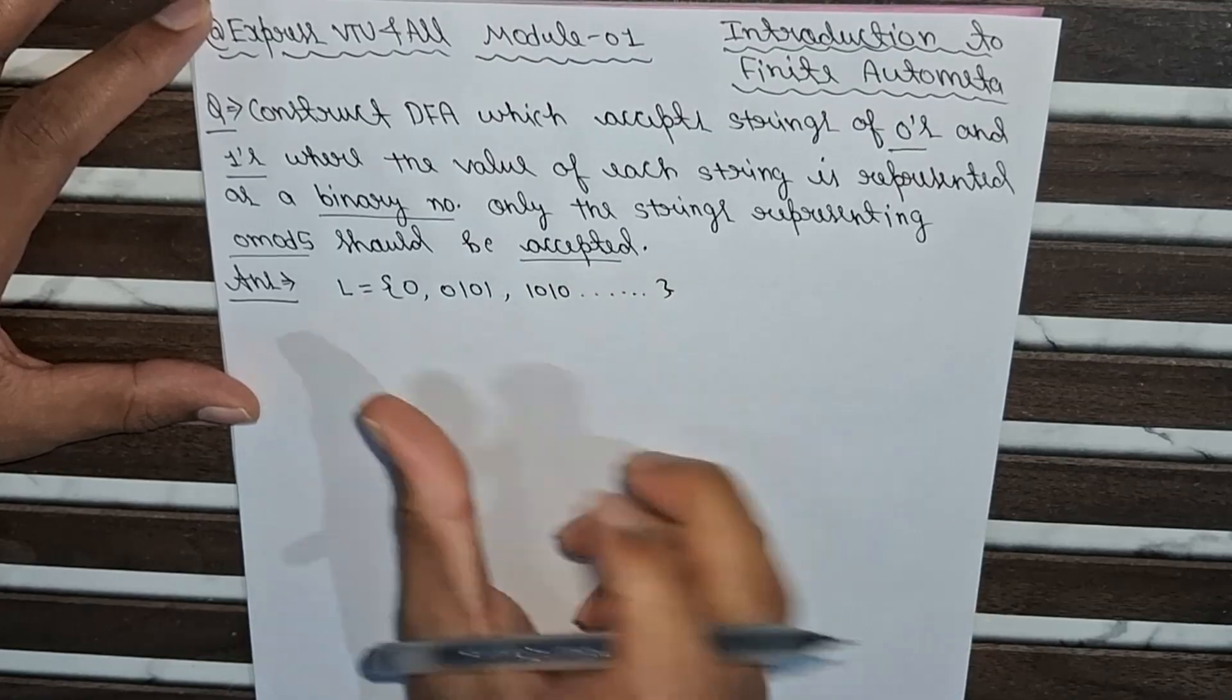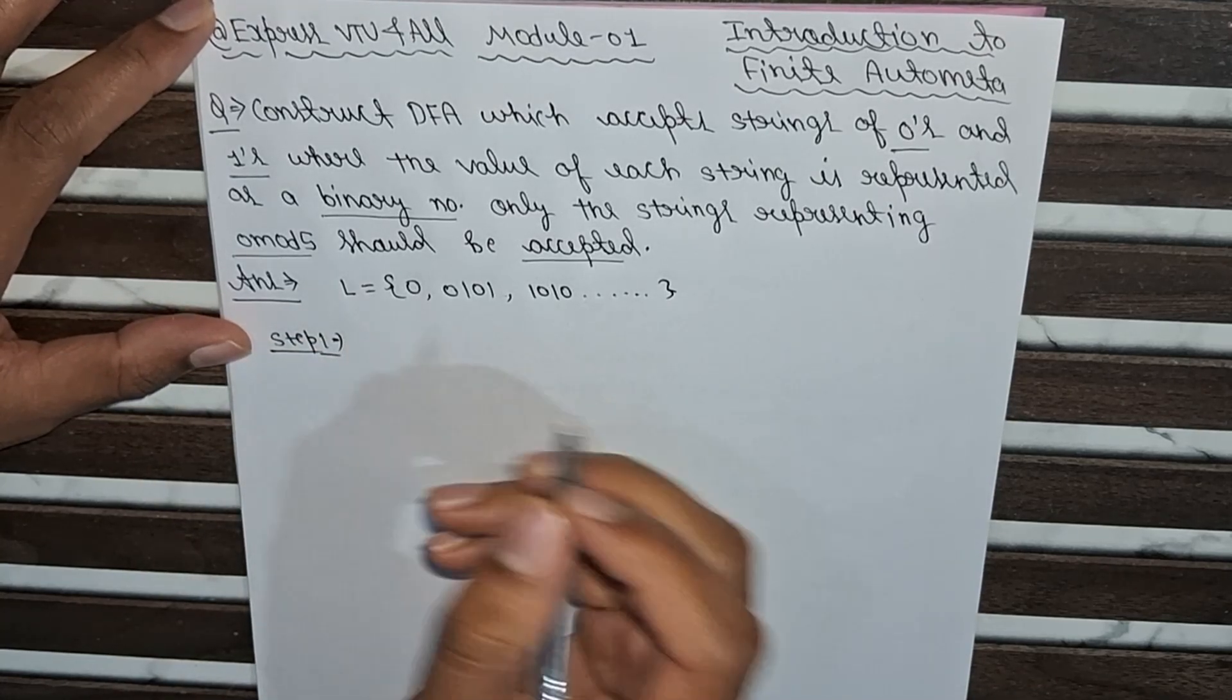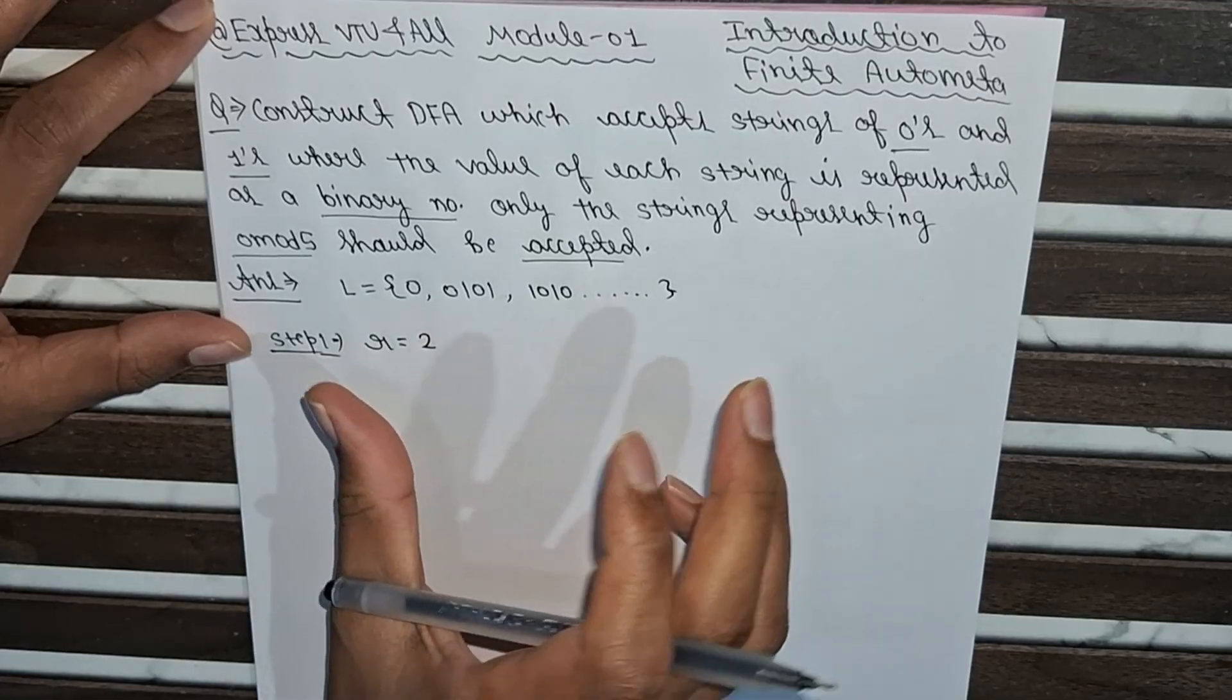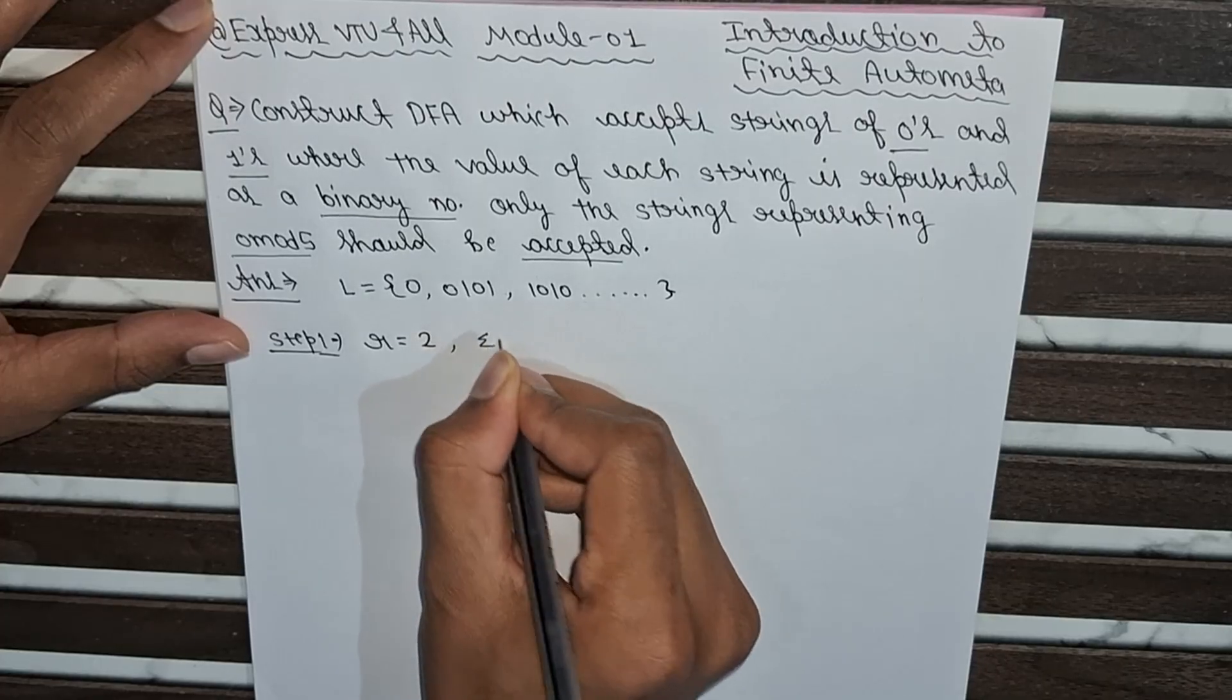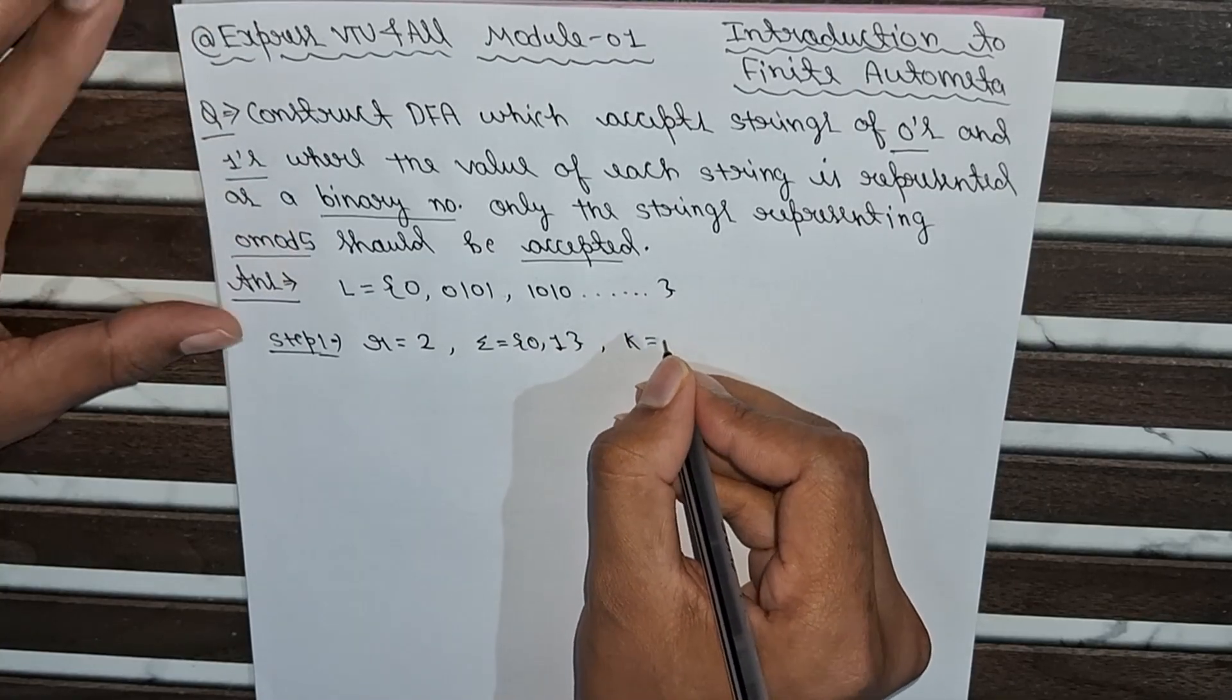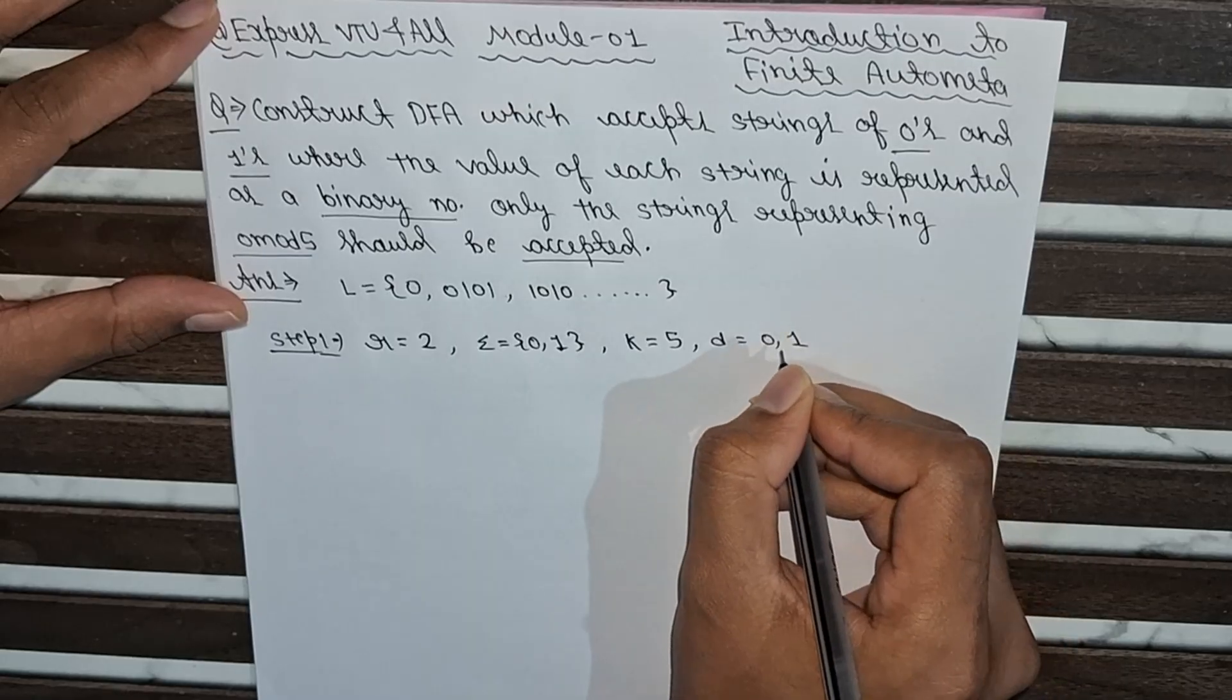Our first step is to identify the radix, input symbols, and the divisor k. The radix value is 2 because it is a binary number (for decimal it would be 10). The input symbols are 0 and 1. The value of k is 5, which is the number by which we will divide. And D equals {0, 1}, where D represents the digits.